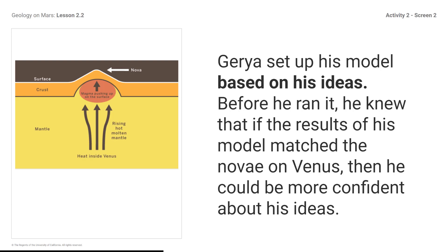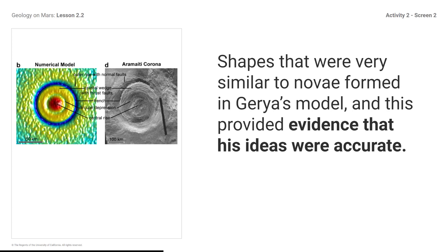Gurria set up his model based on his ideas. Before he ran it, he knew that if the results of his model matched the novae on Venus, then he could be more confident about his ideas. Shapes that were very similar to novae formed in Gurria's model, and this provided evidence that his ideas were accurate. What would Gurria expect to see if his ideas were not accurate? You might respond: the model results would not match the landforms on Venus.